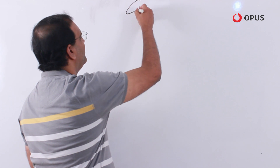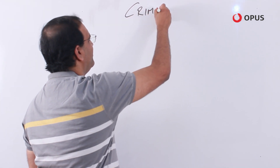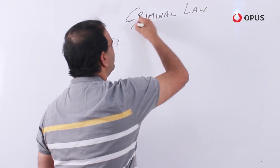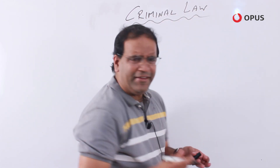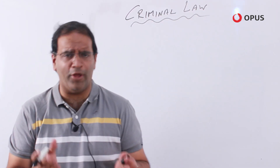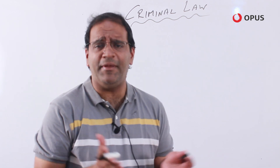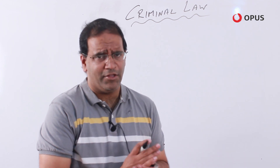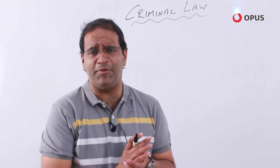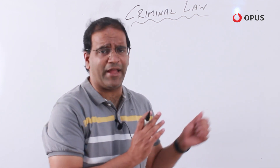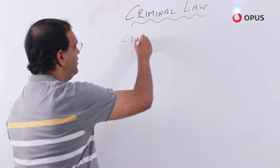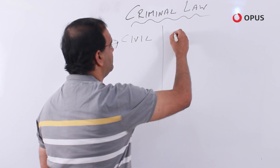Today we are going to have a look at Criminal Law. Very loosely speaking, lawyers and the law can be categorized into two classes: Civil Law and Criminal Law. What are the distinguishing features between Civil Law and Criminal Law is what I am going to have a look at first.